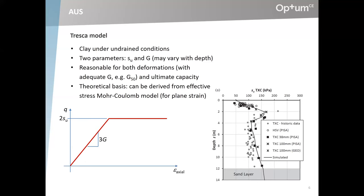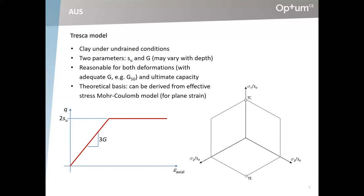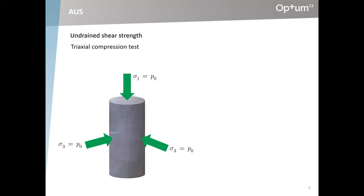These types of profiles are direct input to the TRESCA model, which is quite convenient. You can do something similar with G — you can relate it to SU in one way or another. So all in all, it's not really a terrible model at all.